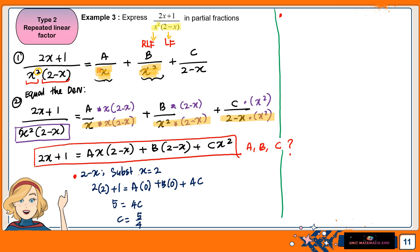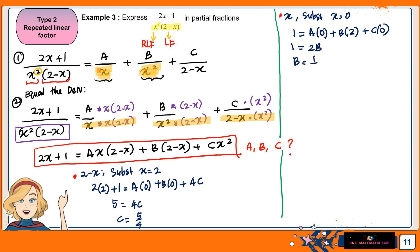For x, we can substitute x = 0 — the easiest value. On the left-hand side we get 1. The term with A has x, so it becomes 0. At B, you get 2. At C, x² also gives 0. So 1 = 2B, therefore B = 1/2.